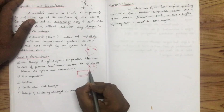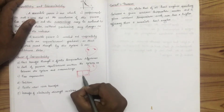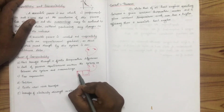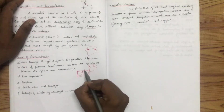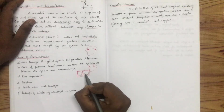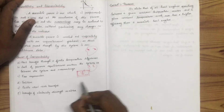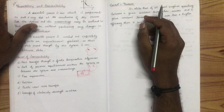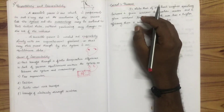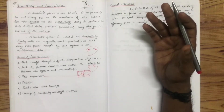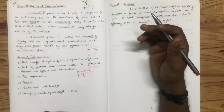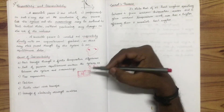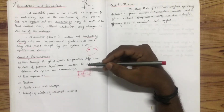Free expansion: there is an insulated container with a membrane. Gas fills one side and there is a space on the other side. The membrane is removed — this is free expansion. When we get heat or energy during the expansion, there is no heat transfer. This is the free expansion example.